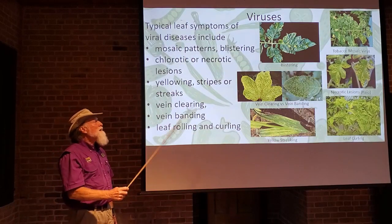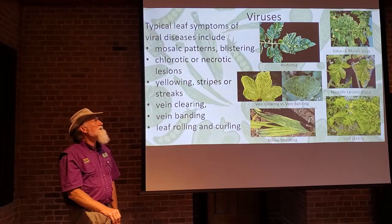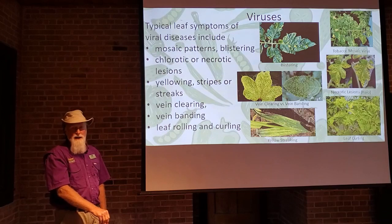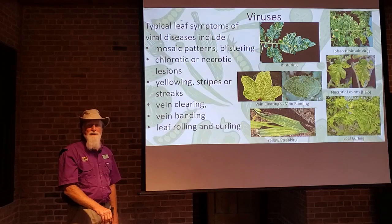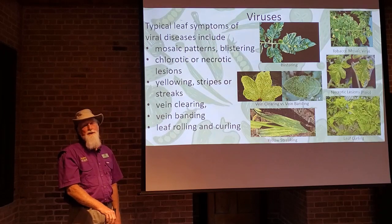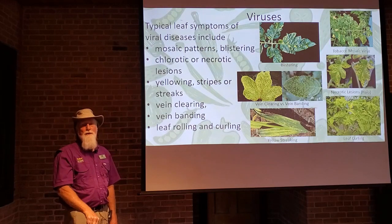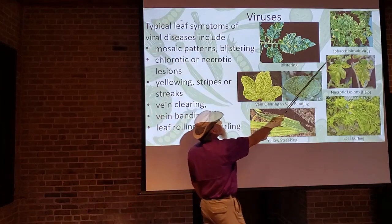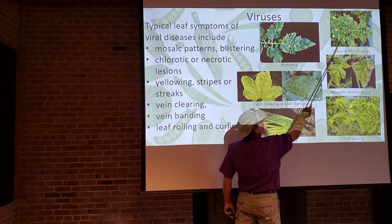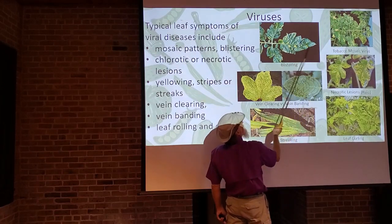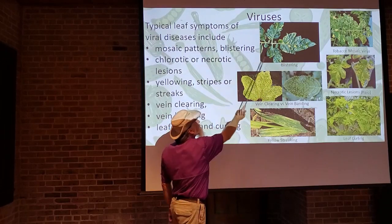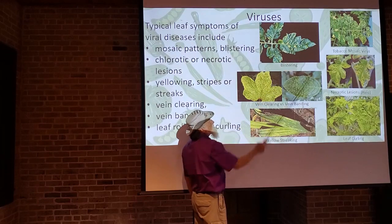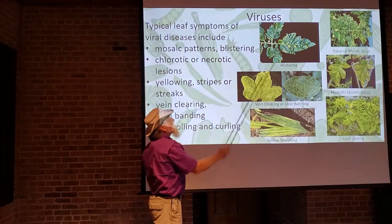Now, the typical leaf symptoms of viruses: a lot of the symptoms are going to be very similar with viruses, bacteria, and fungi, which is why it's very important to identify what the disease is and which organism is causing it. One symptom is mosaic — with tobacco mosaic virus, you see green and chlorotic tissue mixed together. This leaf also shows a blistering pattern, where you see raised bumps on the leaf, which you could also call crinkly — a common symptom of virus on leaves.